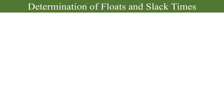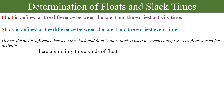Float is defined as the difference between the latest and earliest activity time. Slack is defined as the difference between the latest and the earliest event time. The basic difference between slack and float is that slack is used for events only, and float is used for activities. There are mainly three kinds of floats.